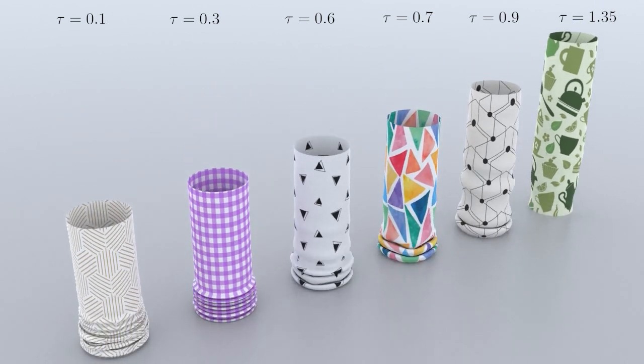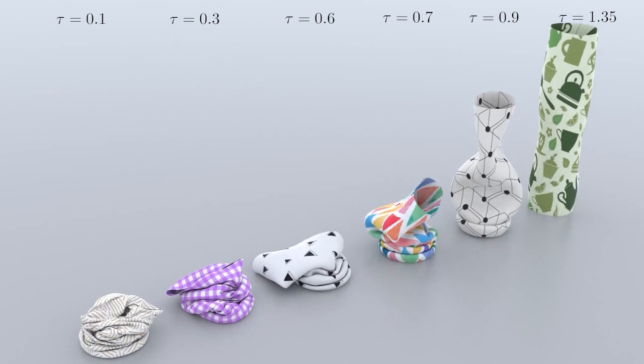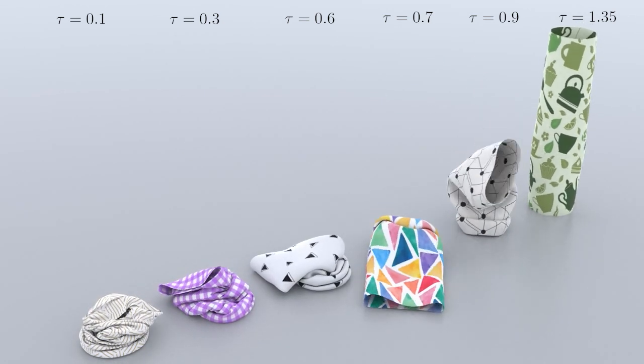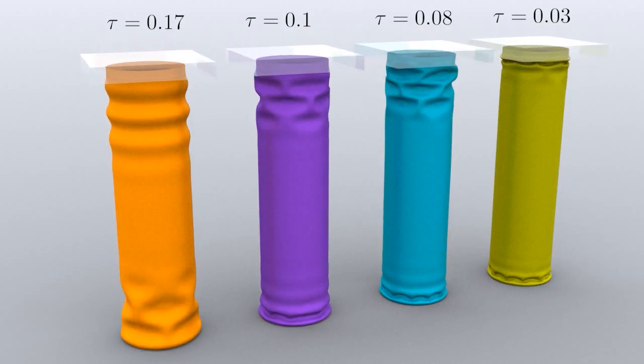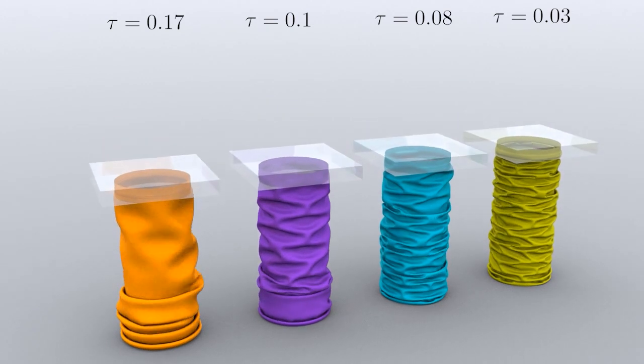By changing the thickness, we can simulate shells with varying bending stiffness. We can see different buckling effects of the sleeves with varying thickness.